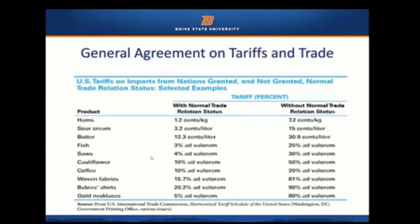Not having normal trade relations status is a huge incentive for countries to become members of the World Trade Organization. For example, on a product like HAM: if you're a WTO member with normal trade relations status, the tariff rate on HAM you're trying to import into another country is 1.2 cents per kilogram. If you're not a WTO member, the tariff rate on that same HAM averages 7.2 cents per kilogram.